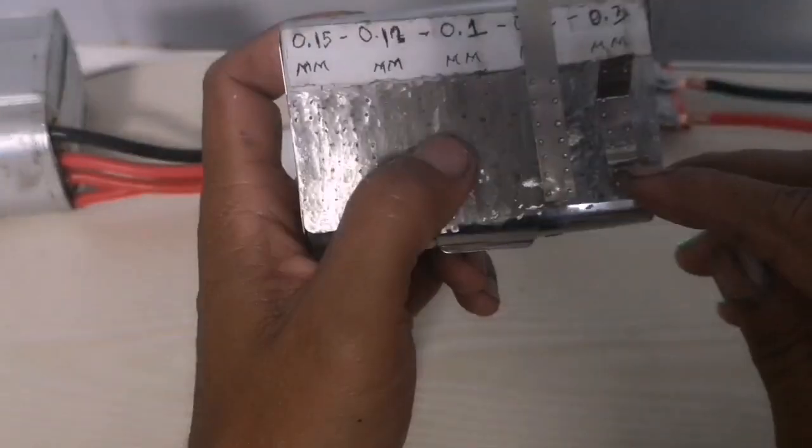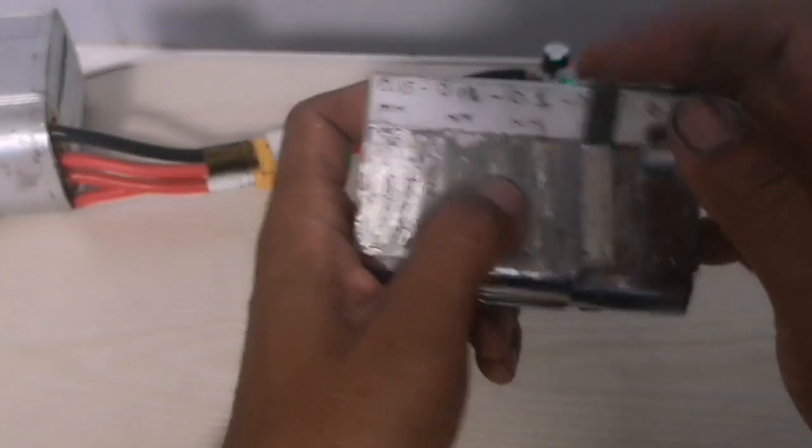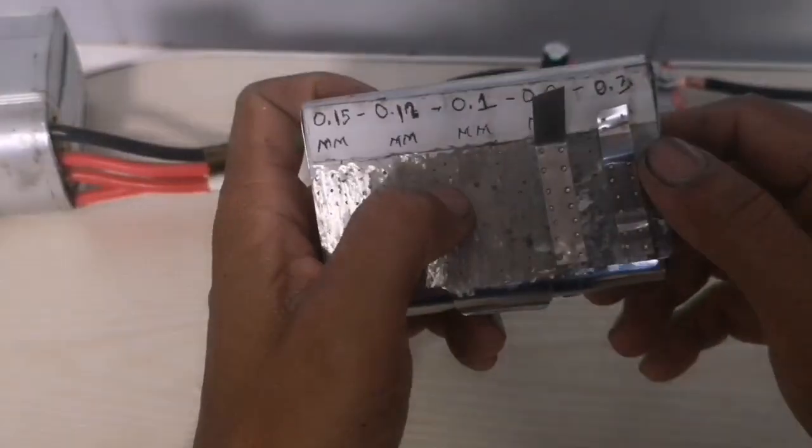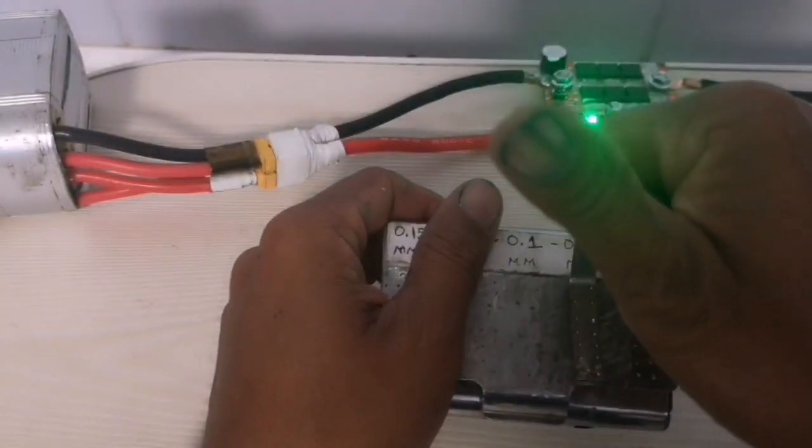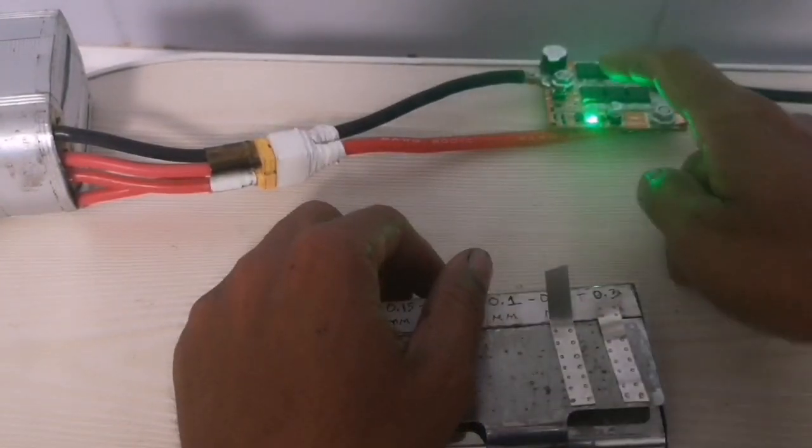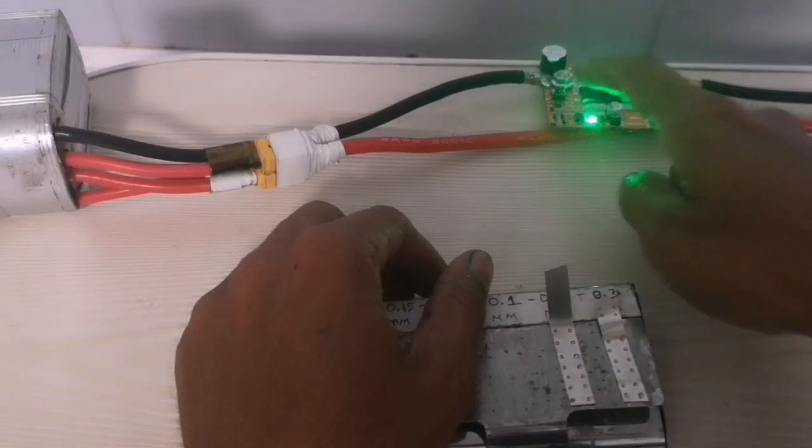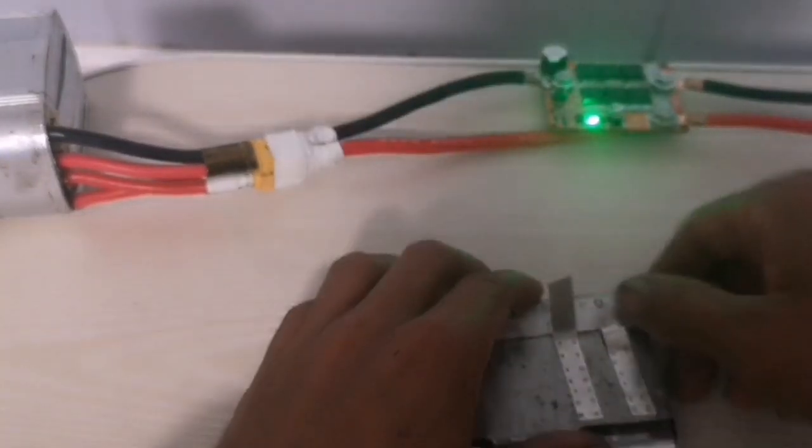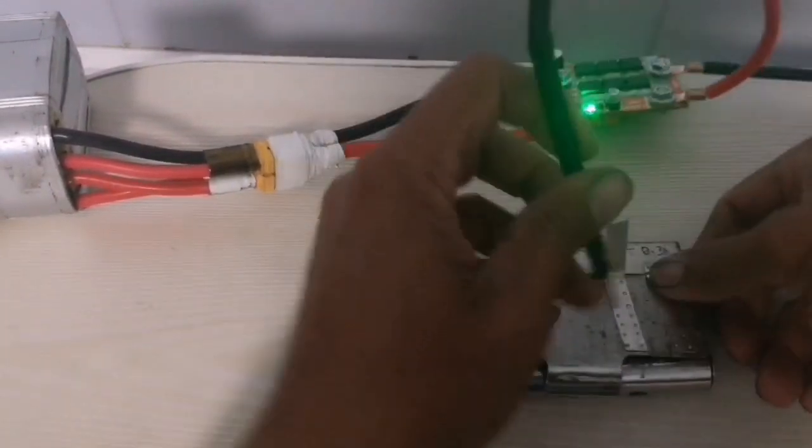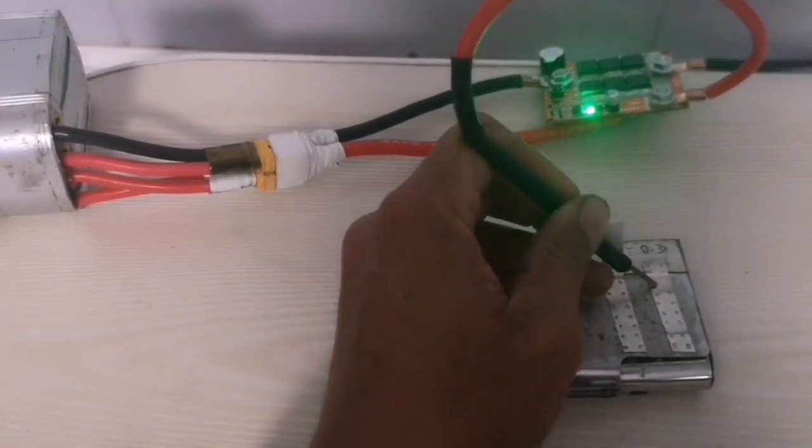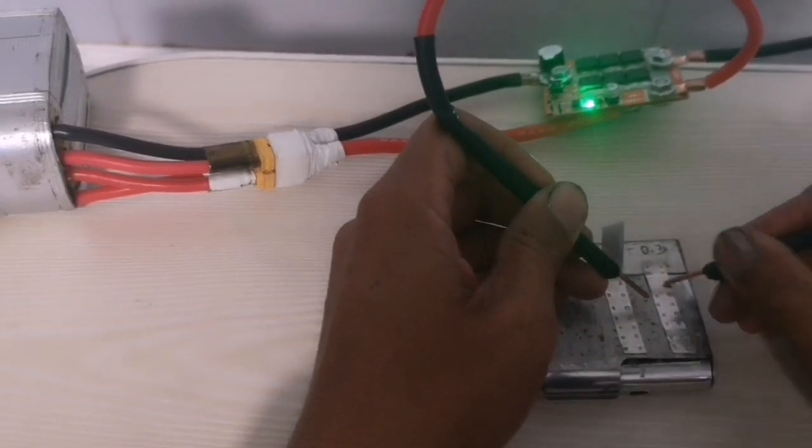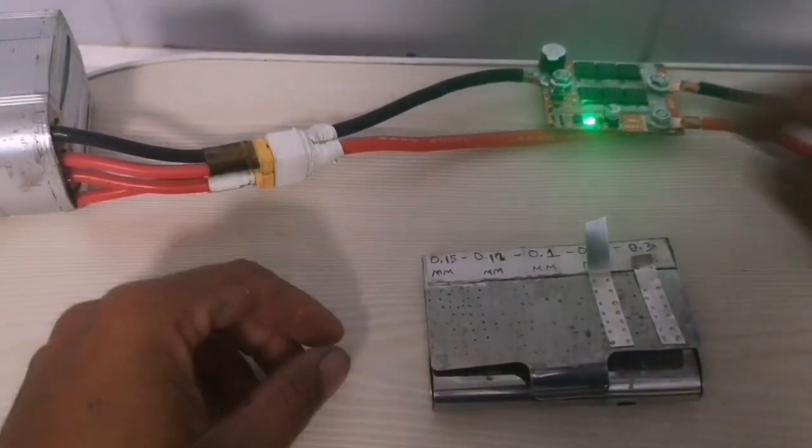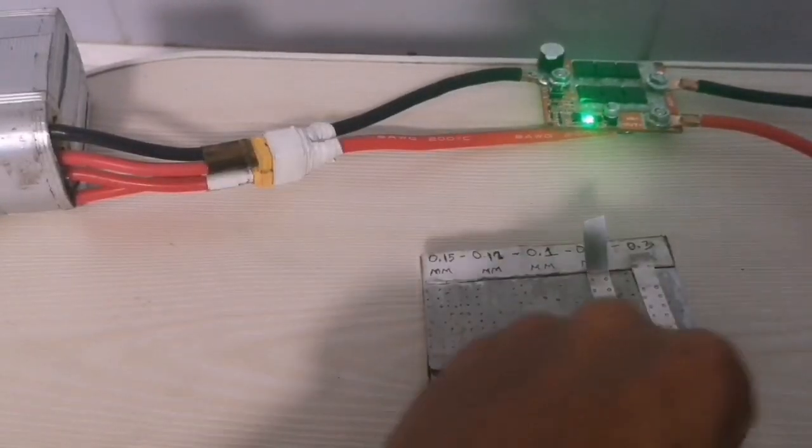So guys, what do you think? Do you prefer to buy an expensive spot welding which costs you about 300 dollars, and this Chinese spot welding will cost you only 15 dollars? Hey guys, maybe my tips bent. Let me look for the pliers.